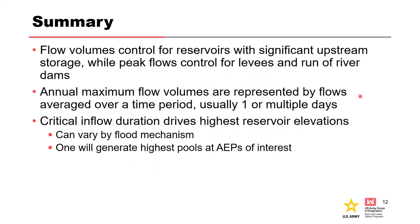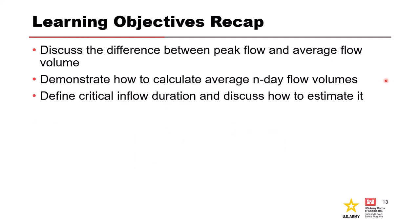In summary: flow volumes control for reservoirs with significant upstream storage while peak flows control for levees and run-of-river dams. Annual maximum flow volumes are represented by flows averaged over a time period, usually one or multiple days. The critical inflow duration drives the highest reservoir elevations, and this can vary by flood mechanisms and season. We discussed the difference between peak flows and average flow volumes, demonstrated how to calculate average n-day flow volumes, and defined critical inflow duration and how to estimate it.